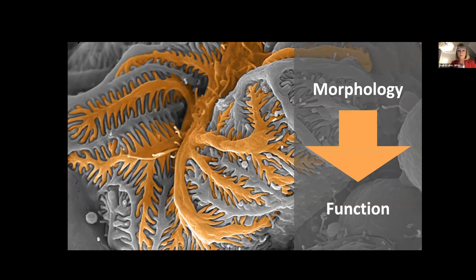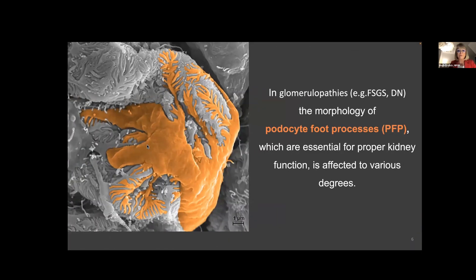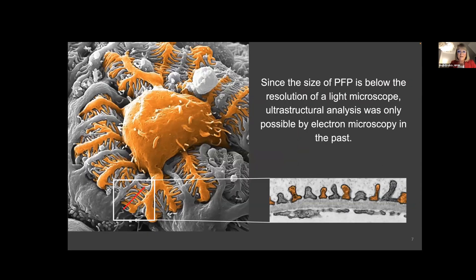Any changes of the morphology will also lead to a change of the filtration process. In many glomerulopathies like FSGS, diabetic nephropathy, and others, the morphology of the podocyte foot processes are affected to various degrees — you can see a broadening of the foot processes. You can see here a cross-section of normally formed foot processes with a slit membrane in between, covering the outer aspect of the capillary, and also the glomerular basement membrane.